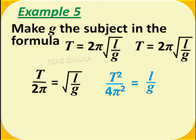Now, removing the square root sign, we have to square both sides. So we have T²/4π² = l/g.